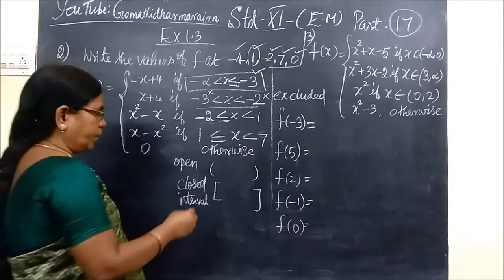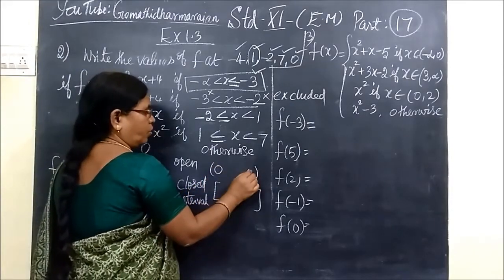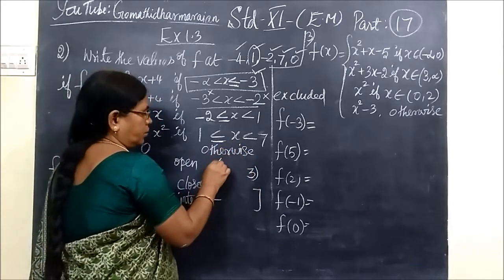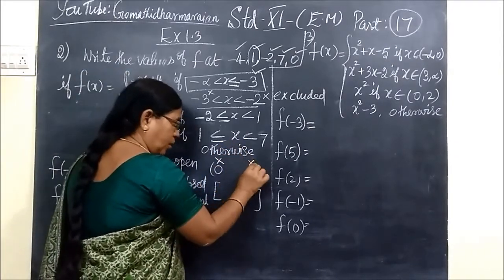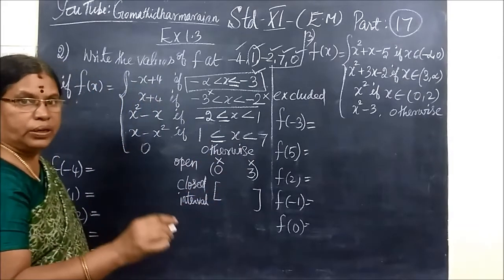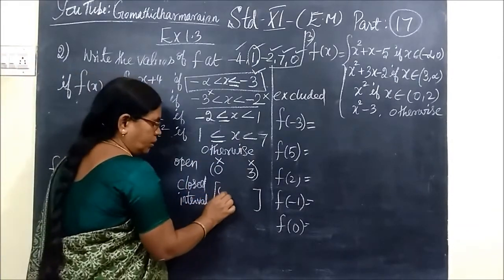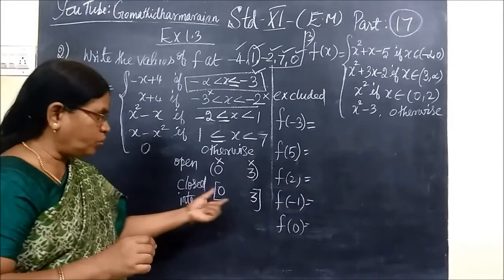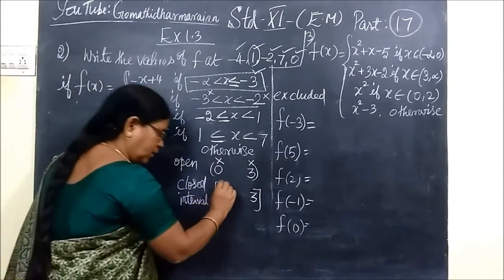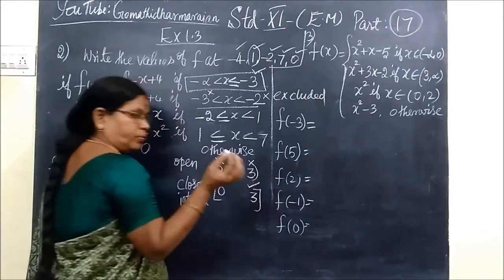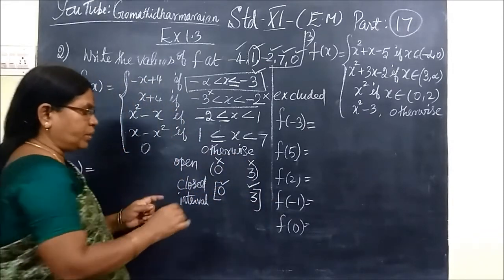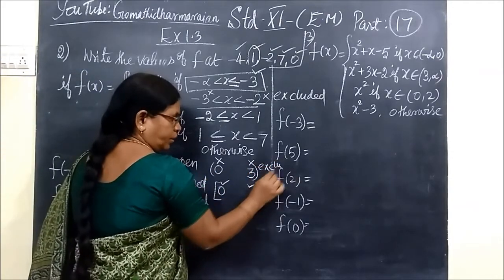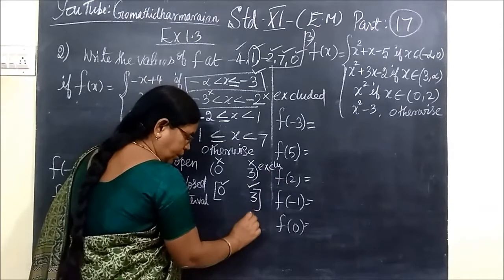In open interval, if the numbers are 0 and 3, you should not consider 0 and 3. In closed interval, the interval is 0 to 3 — you are considering 0 and 3. That is the difference. So open interval means excluding, and closed interval means including.